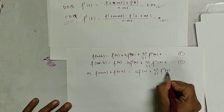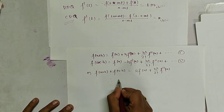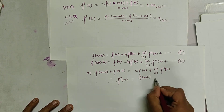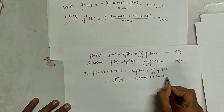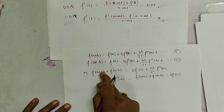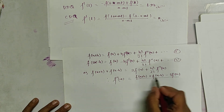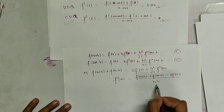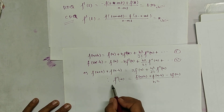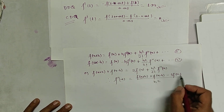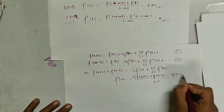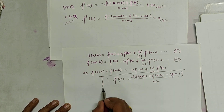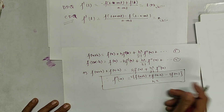By adding these two Taylor series equations, the f'(x) terms cancel and we can write f''(x) equals [f(x+h) plus f(x-h) minus 2·f(x)] divided by h². This is the formula for the second order derivative.